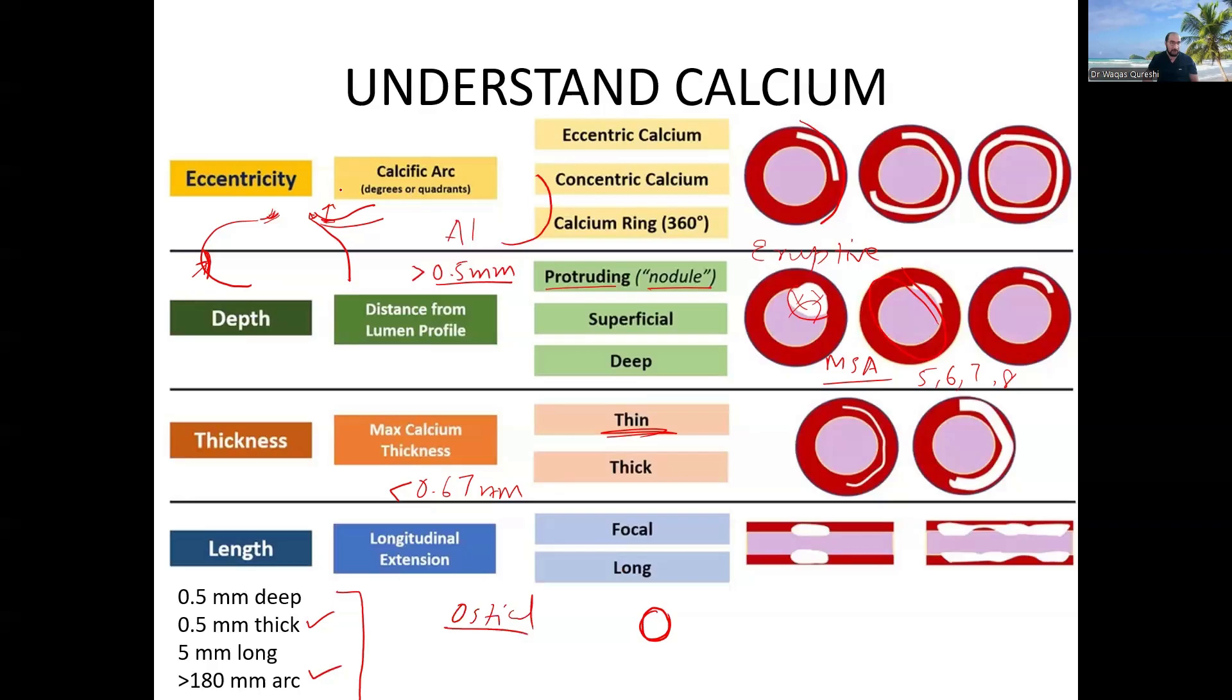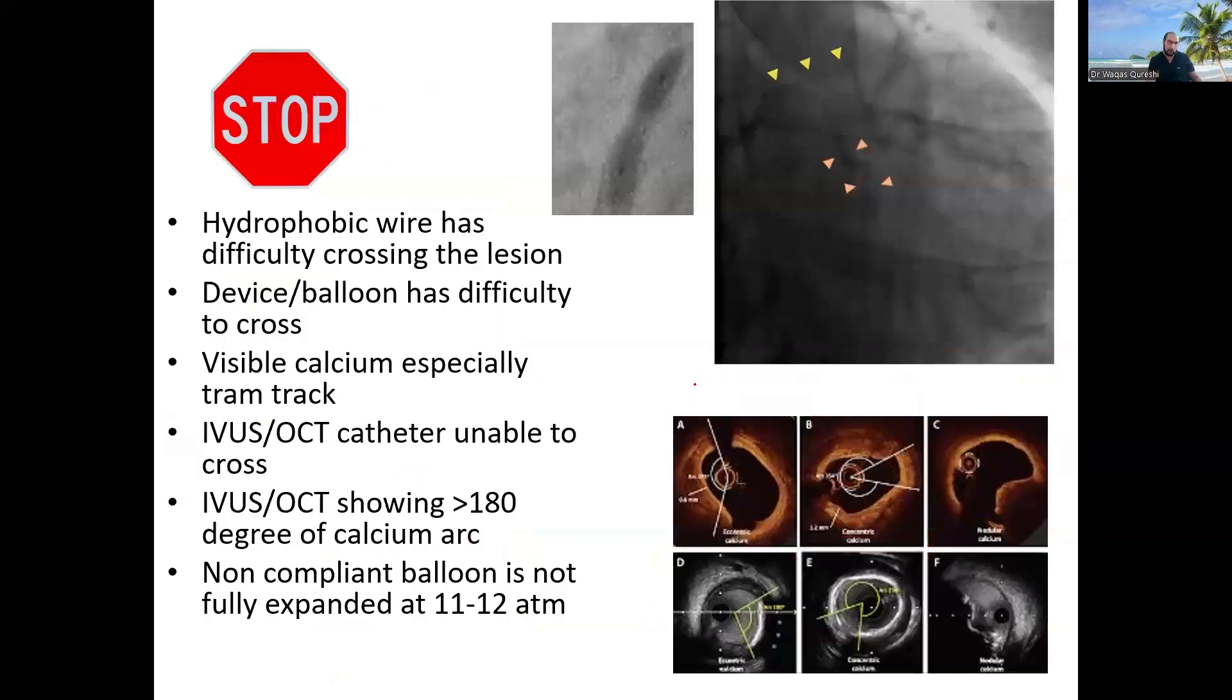So again, eccentricity, more than 180 degrees of arc, consider atherectomy. More than 5 mm length, consider atherectomy. More than 0.5 mm thickness, consider atherectomy. More than 5 mm depths, consider atherectomy. So if you have two out of these, definitely consider atherectomy. Otherwise, you will have what we call as rota regret or atherectomy regret later on.